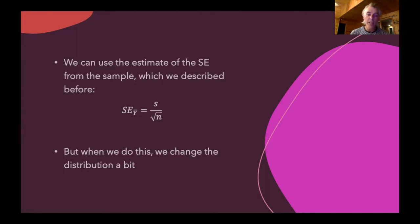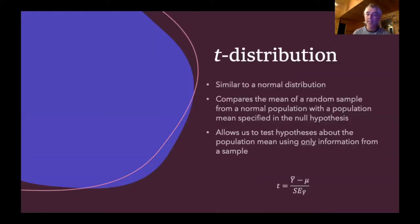But when we do this, we change the underlying distribution a little bit. Instead of dealing with a z-distribution, we need to make an adjustment and instead talk about what's called the t-distribution. Our t-distribution is very similar to our normal distribution. It compares the mean of a random sample from a normal population with a population mean specified in the null hypothesis, so we can determine whether our population deviates from this hypothesized mean, using only information contained within the sample.